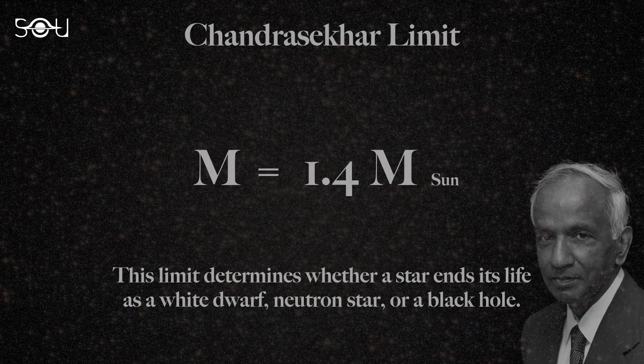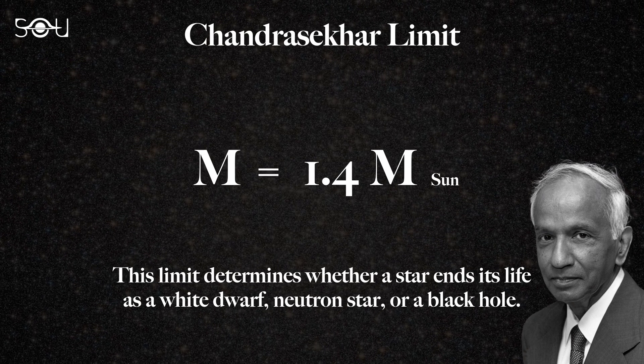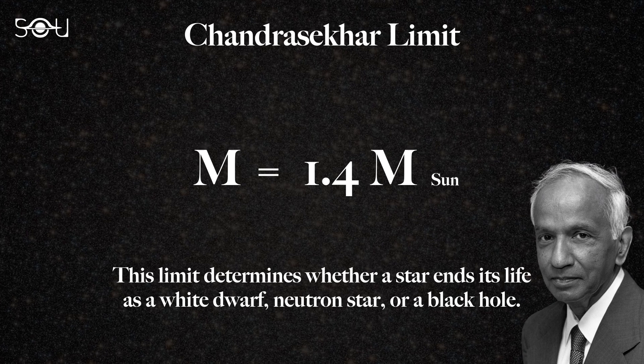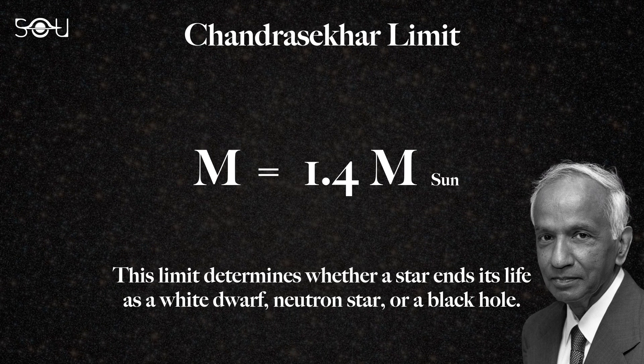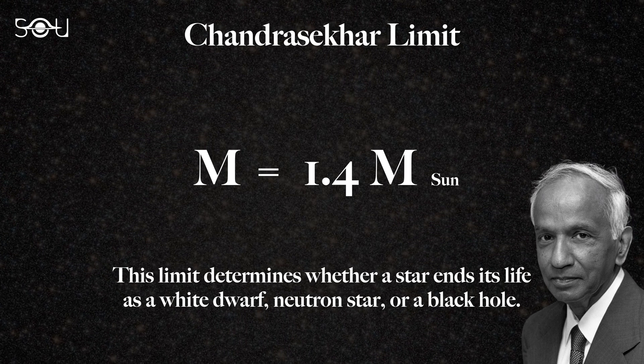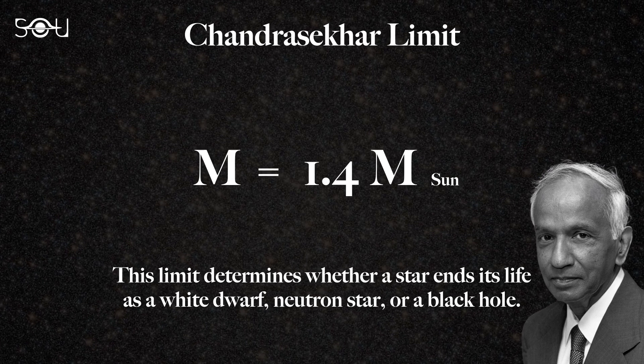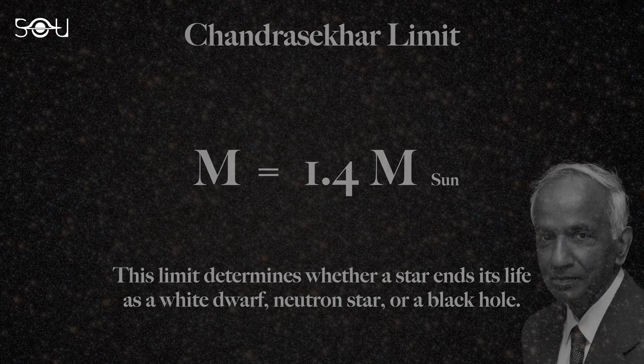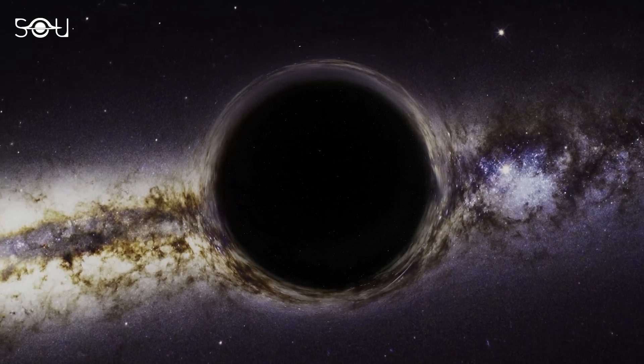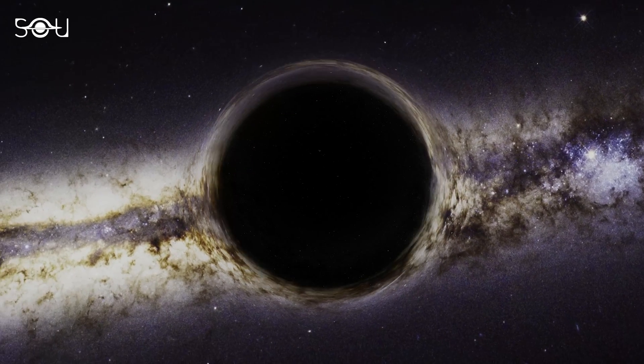In 1930, Indian astrophysicist S. Chandrasekhar discovered that if a star were more massive than a specific limit, known as the Chandrasekhar limit, the star's core would collapse to form a black hole. But Einstein could not wrap his mind around this idea of gravitational singularity.